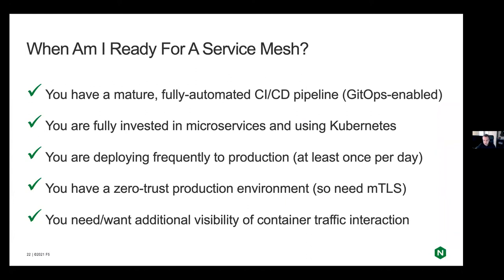If you have a fully automated CI/CD pipeline, you're using Kubernetes, you have an ingress controller deployed, you want to add mutual TLS in a zero-trust environment, and you want really granular traffic control within your cluster — then yes, a service mesh could definitely help you there. The idea is that you inject a sidecar proxy within your Kubernetes environment to have more granular control.